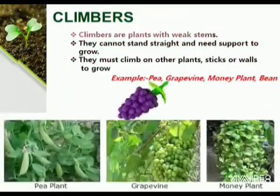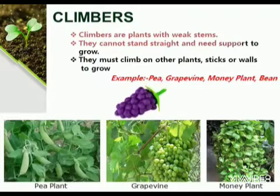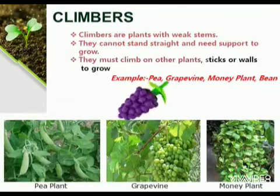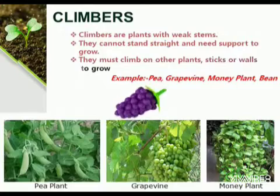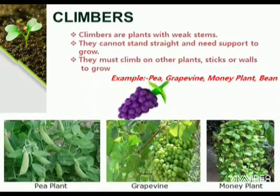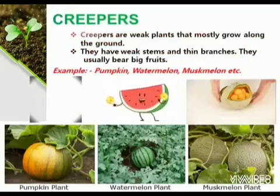Climbers. Some plants have weak stems and they need the support of other plants, walls or sticks to grow upright. Such plants are called climbers. Examples are money plant and grapevine.